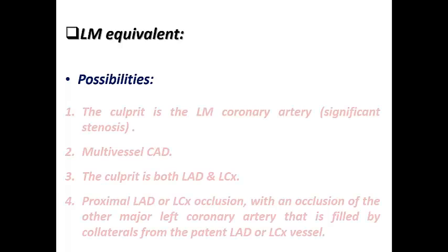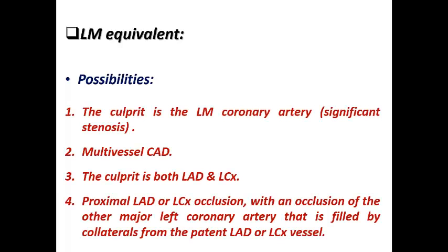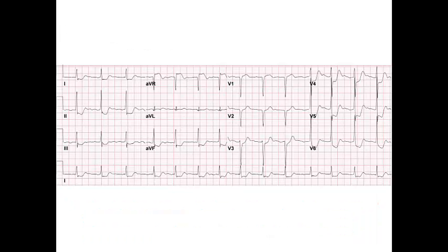The presence of ST elevation in AVR with ST depression in the inferolateral leads is very suggestive of left main equivalent. The culprit possibilities include: left main coronary artery, multivessel coronary artery disease, combined LAD and LCX occlusion, or proximal LCX occlusion — meaning occlusion of the other major left coronary artery that is supplied by collaterals from a patent LAD or LCX vessel.